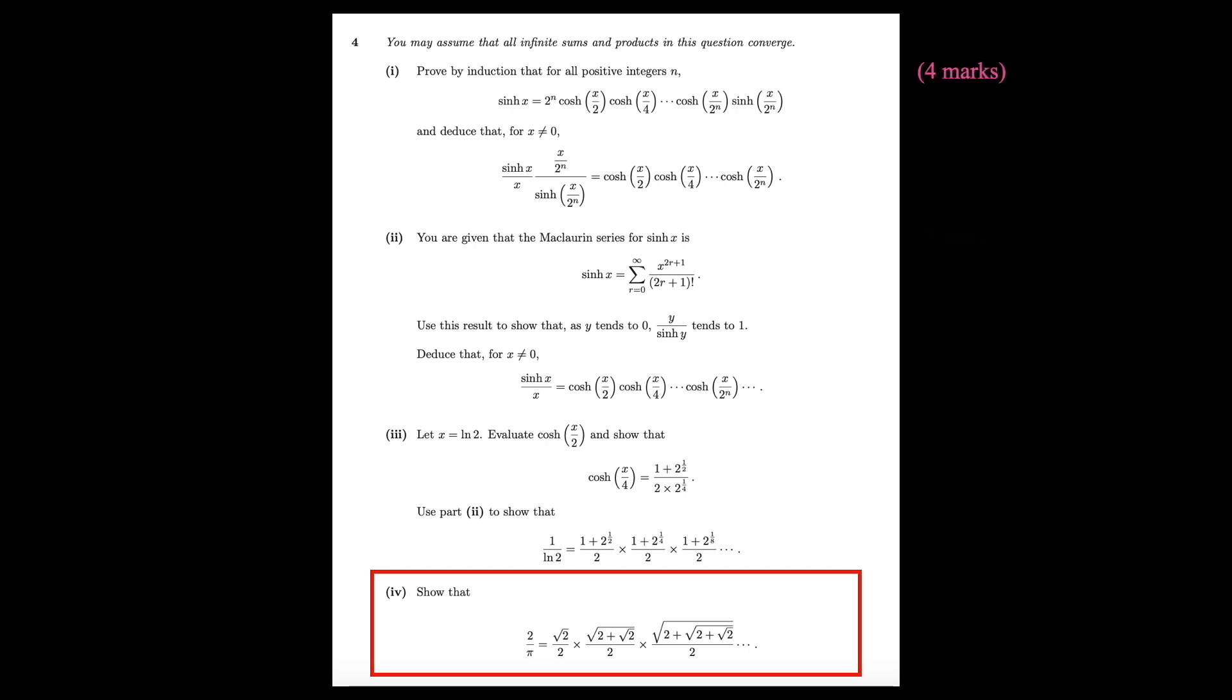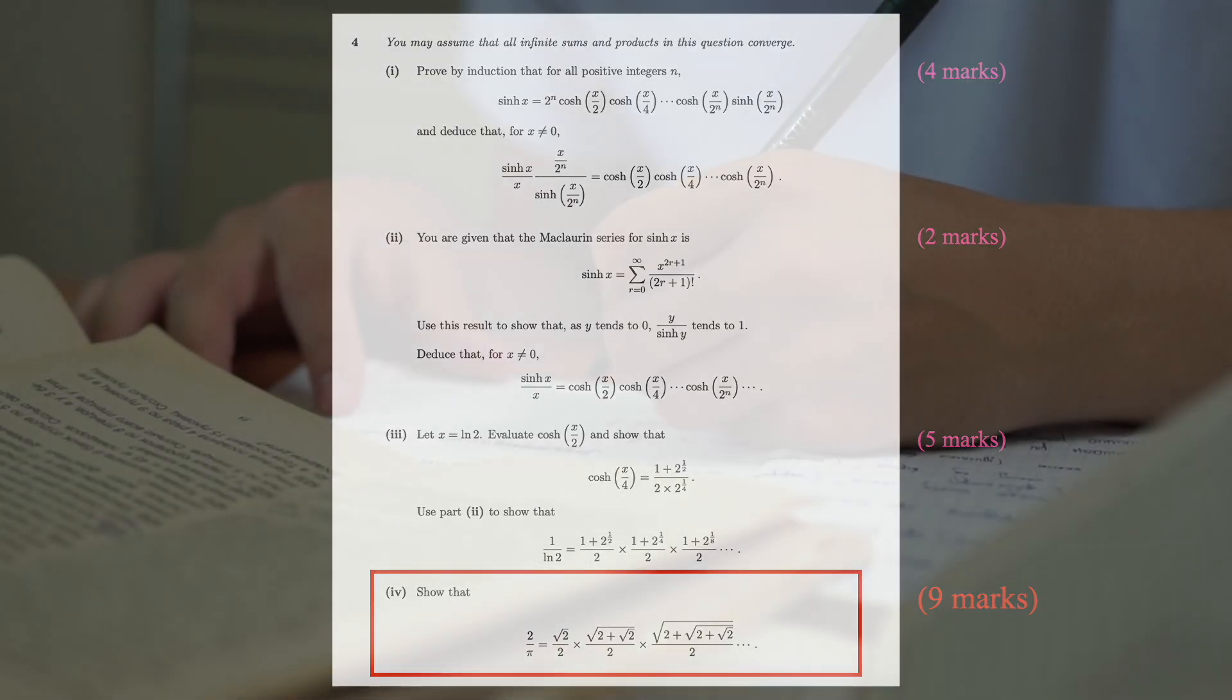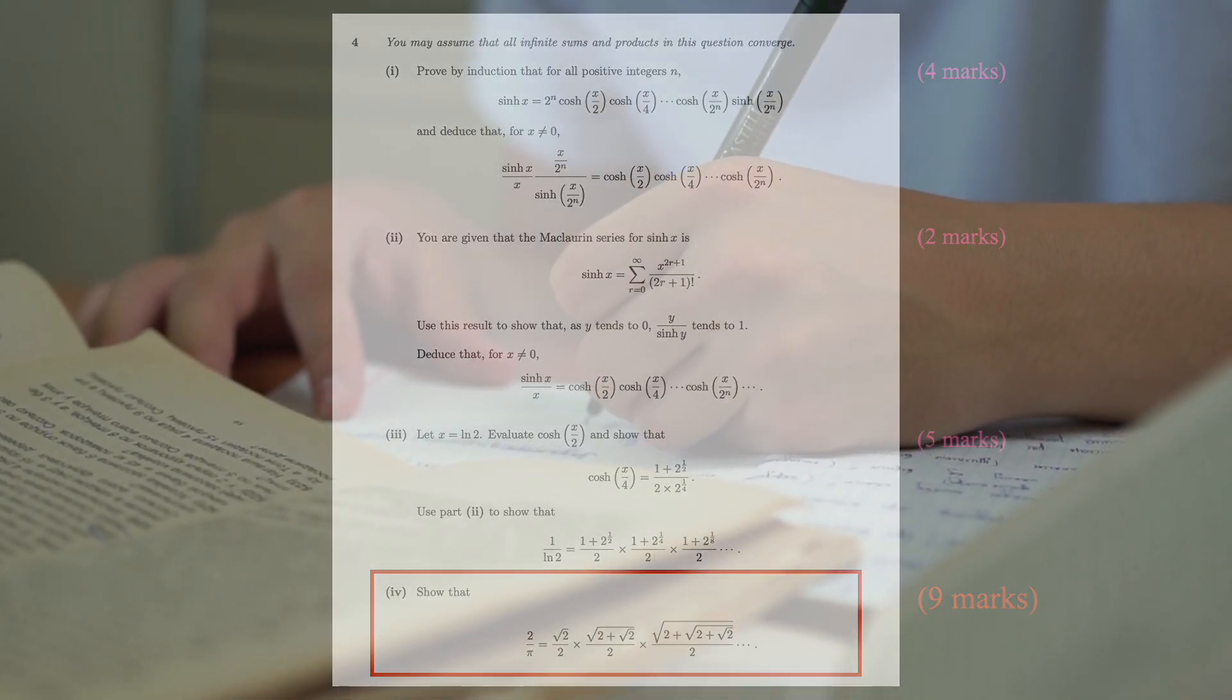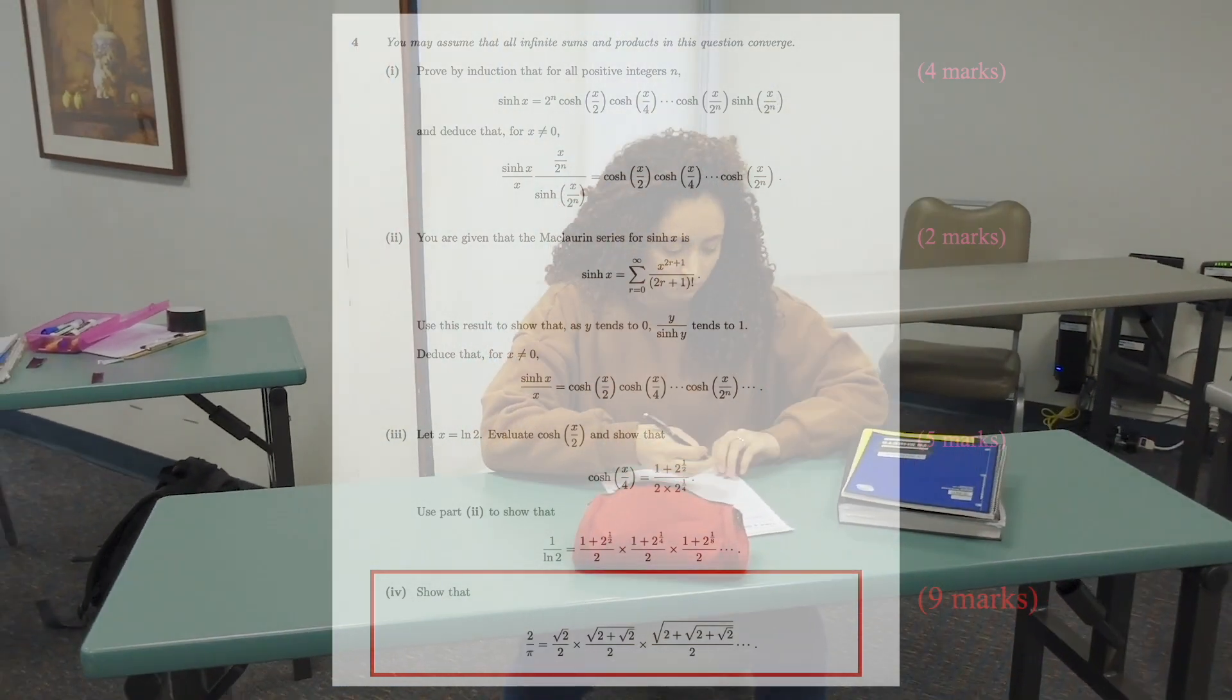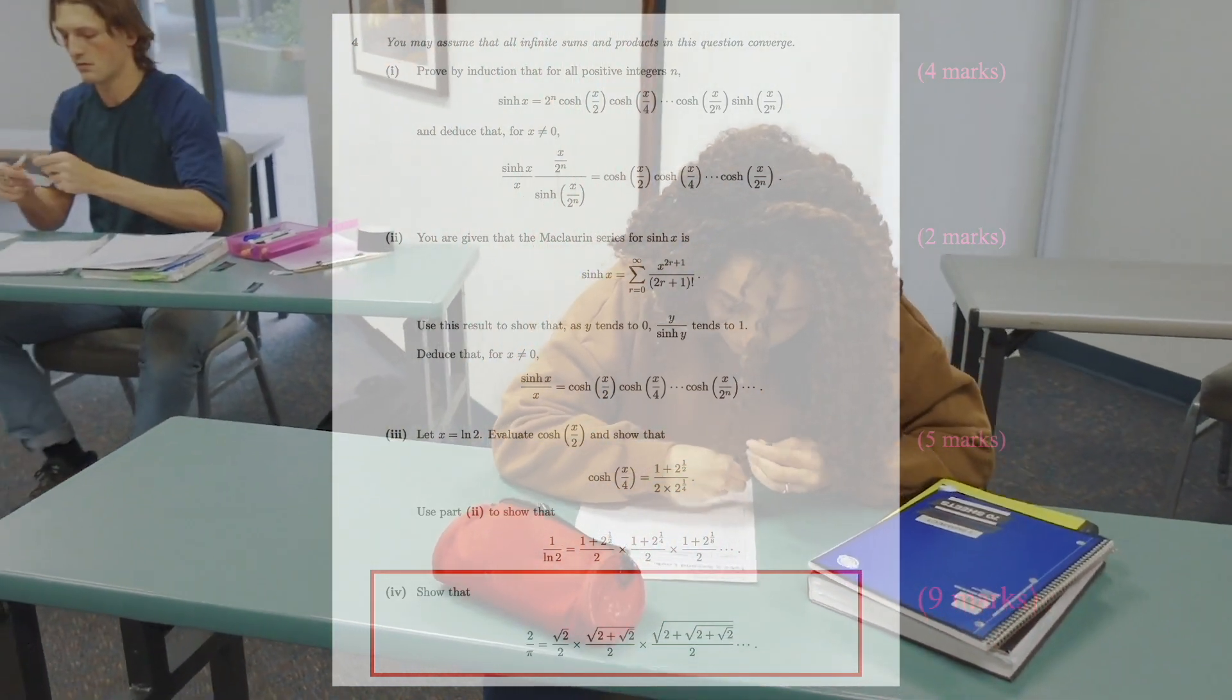According to the mark scheme, 9 marks, out of the 20, were allocated to this sub-question. Yet the derivation, which I am going to give you next, is surprisingly short. In roughly 5 lines, you should be able to derive the required formula.